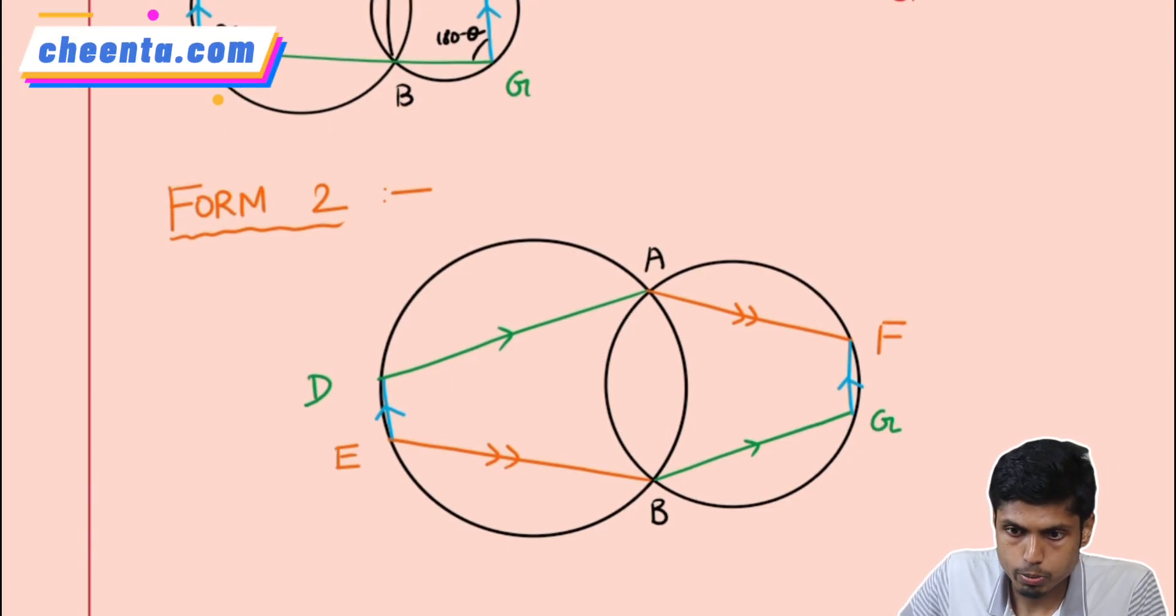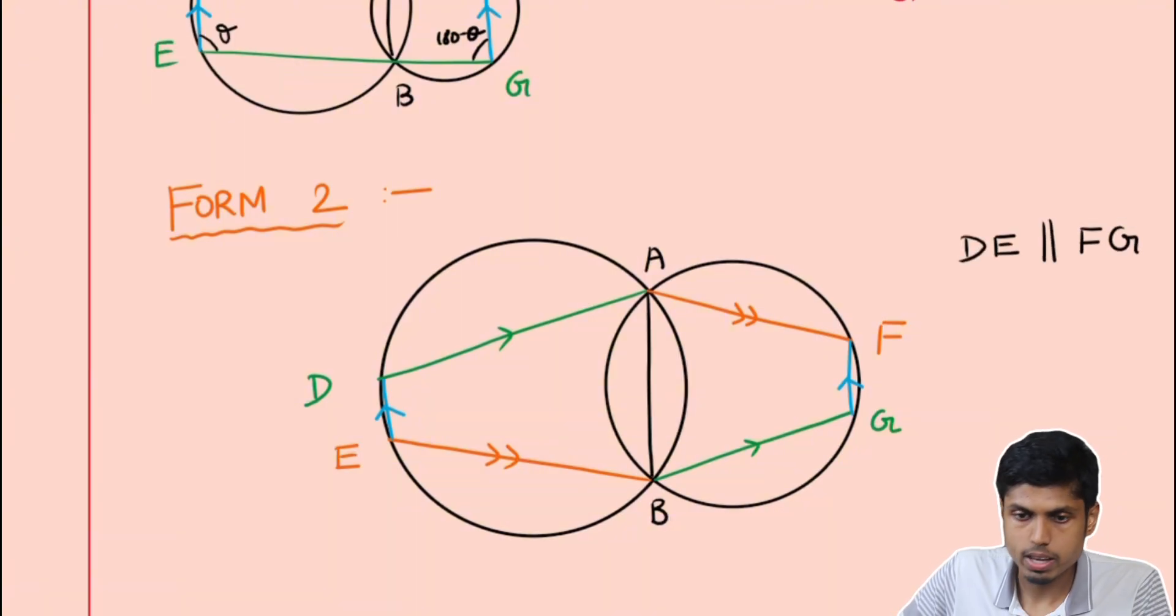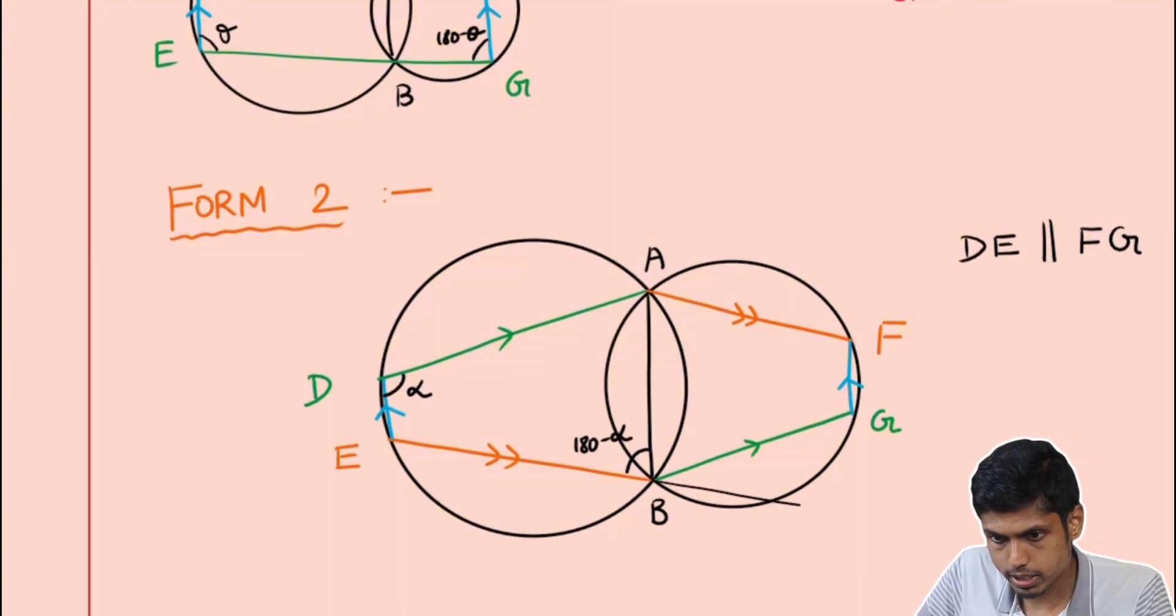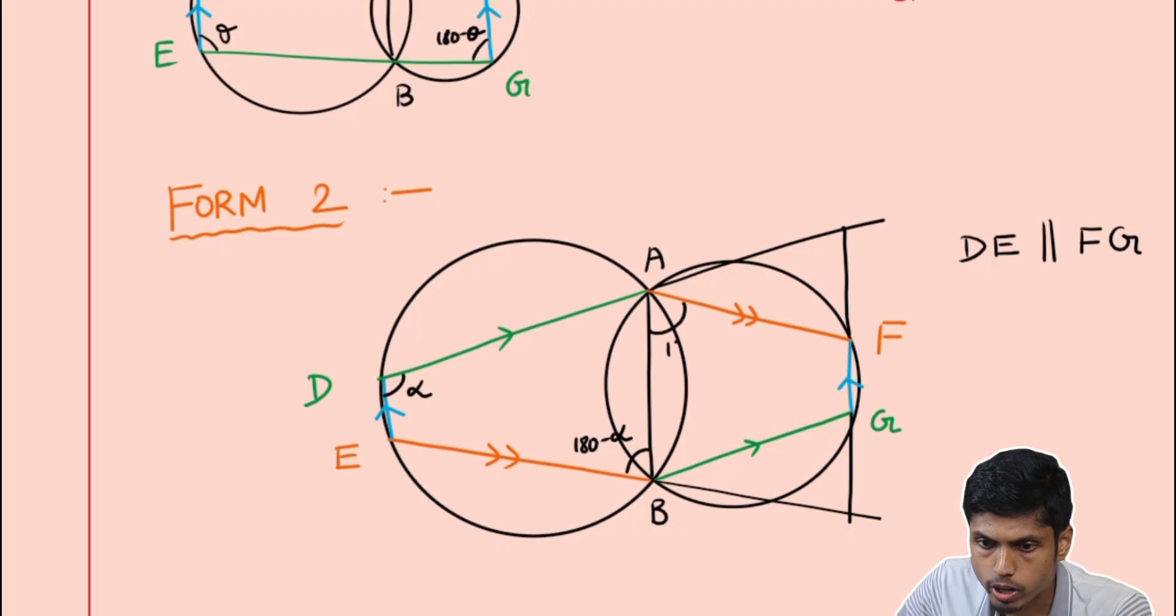So how to prove this? Well, the proof should not be difficult. In the same way, we are going to prove DE is parallel to FG by a bit of angle chase. Suppose this is alpha and it means that this angle will be 180 minus alpha. And suppose I wish to extend these two lines in order to intersect FG. So we get angle EBA to be 180 minus alpha. And since EB is parallel to AF, the angle BAF will be also 180 minus alpha.